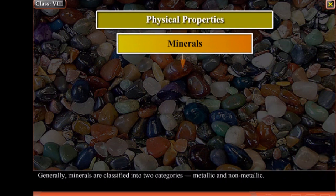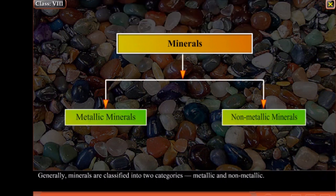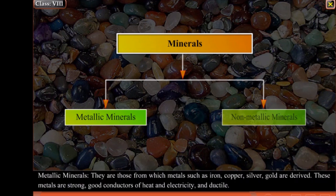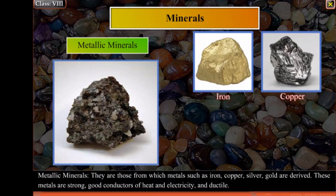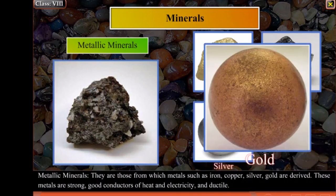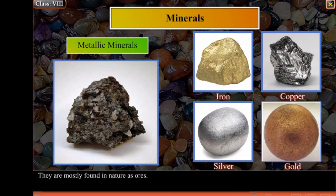Generally, minerals are classified into two categories: metallic and non-metallic. Metallic minerals are those from which metals such as iron, copper, silver and gold are derived. These metals are strong, good conductors of heat and electricity, and ductile. They are mostly found in nature as ores.